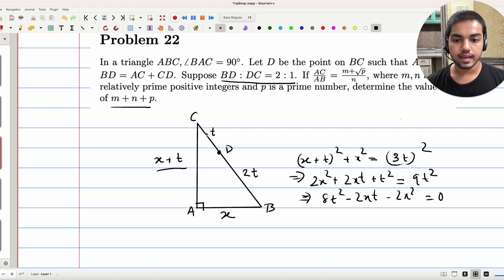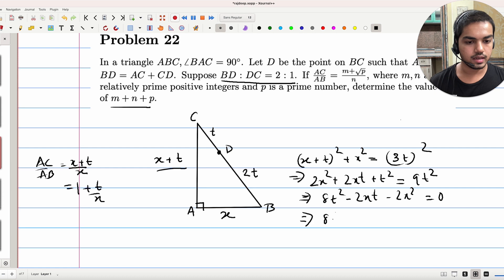Thinking of X as a constant. Now we want to find AC by AB. What is AC by AB? That's X plus T by X, which is just 1 plus T by X. It makes sense then to divide throughout by X square to get 8 of T by X square minus 2 of T by X minus 2 is equal to 0.